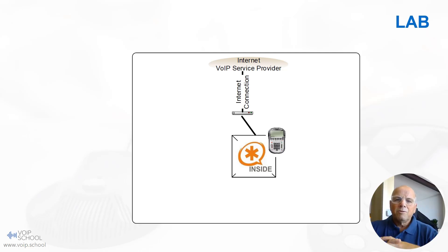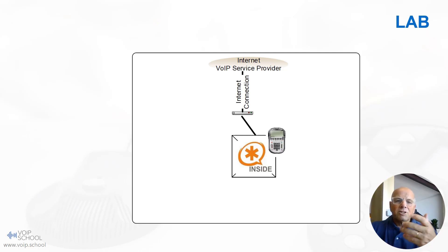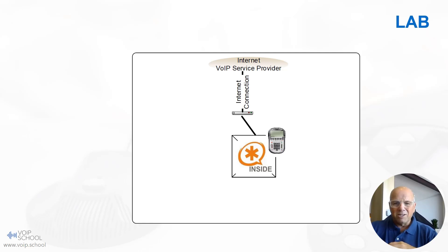In this lab scenario, we will explore how an Asterisk PBX system connects to an internet voice service provider. The Asterisk system establishes an internet connection to the VoIP service provider, allowing it to make and receive calls over the internet while leveraging the provider's network. This is the easiest way to test Asterisk: connect to a VoIP provider and connect a soft phone. You don't have to spend a lot of money to learn Asterisk.